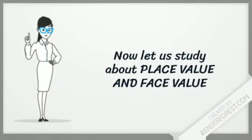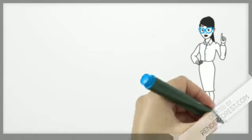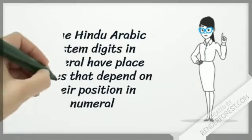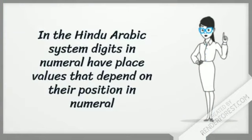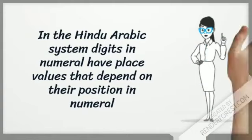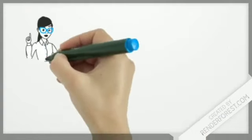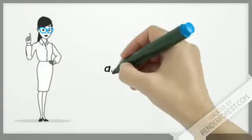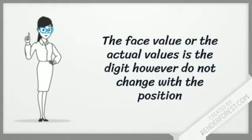Now let us study about the place value and the face value. In the Hindu-Arabic system, digits in the numerals have place value that depend on their position in the numeral. The face value or the actual value is the digit that does not change with the position.